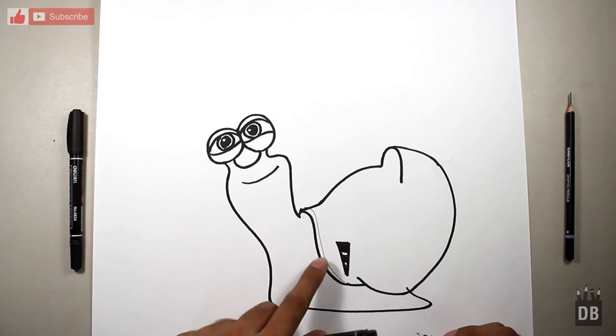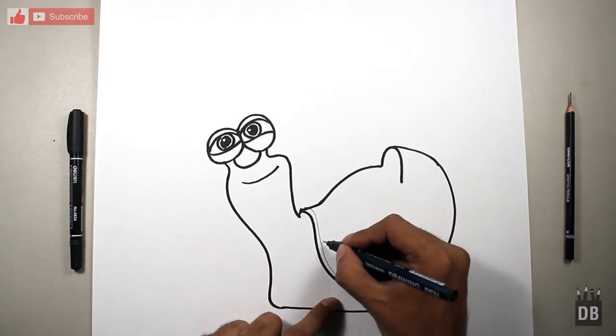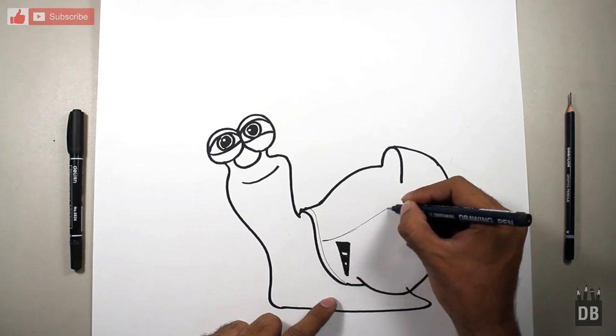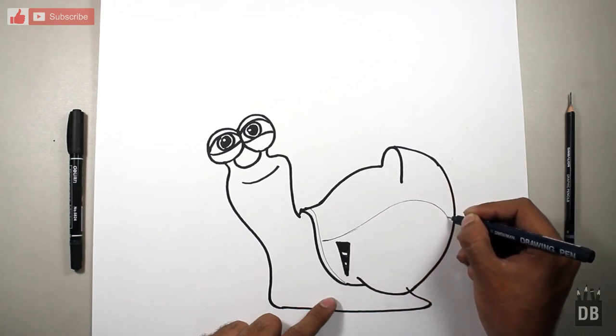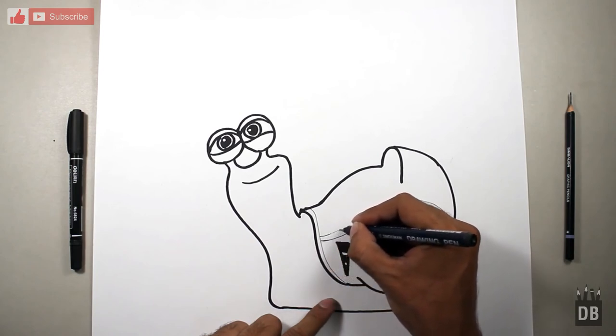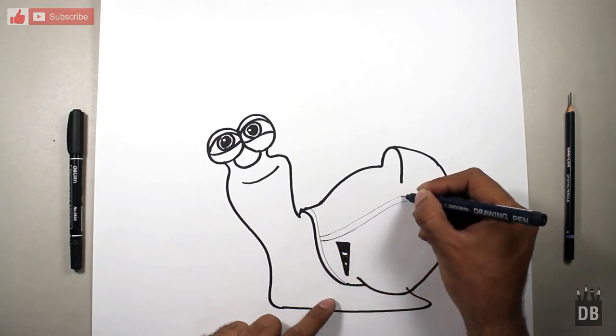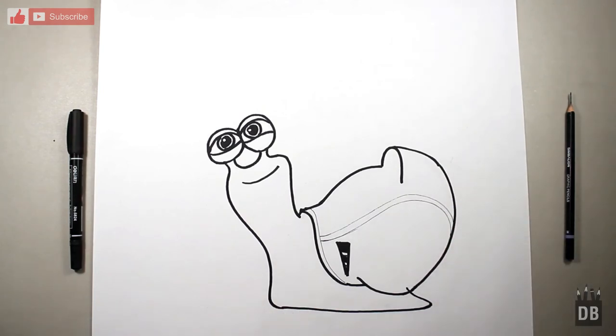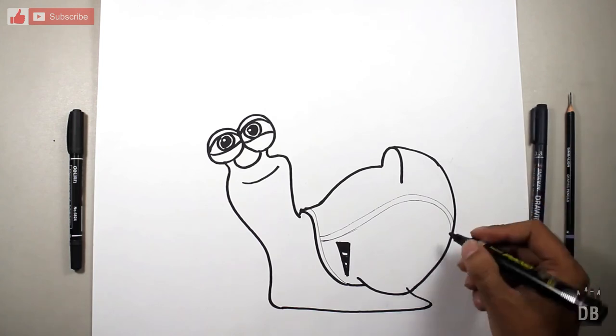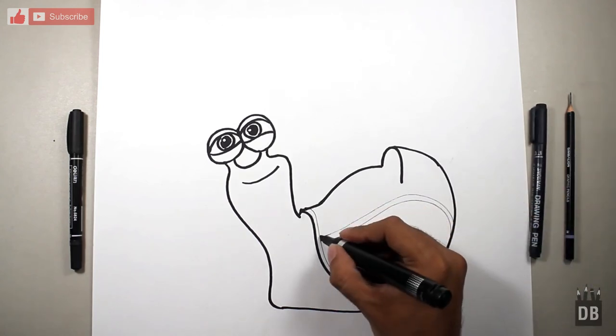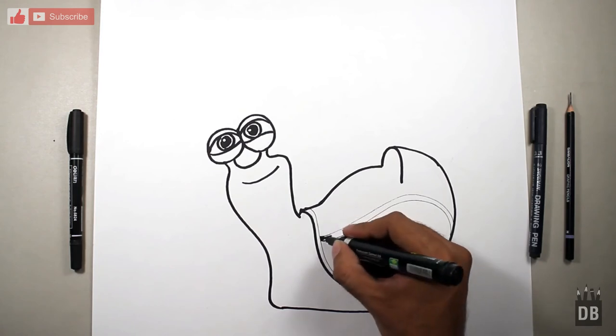Make a line like this and a double line like this. Make use pencil first so you are not going to make mistakes and color it in black so it will be more visible for you to see.